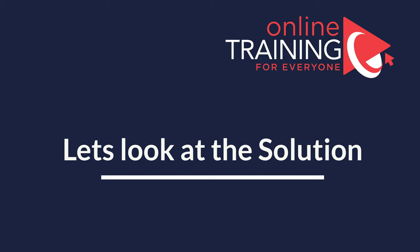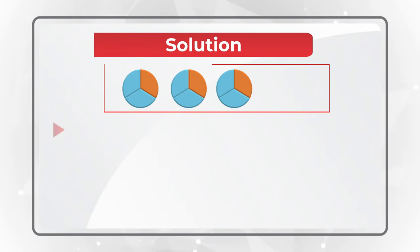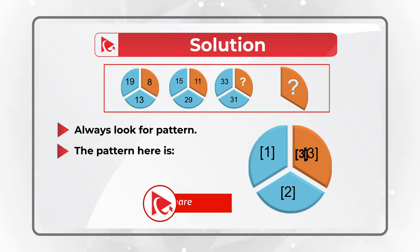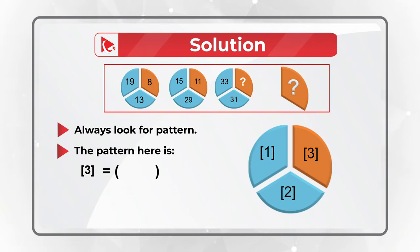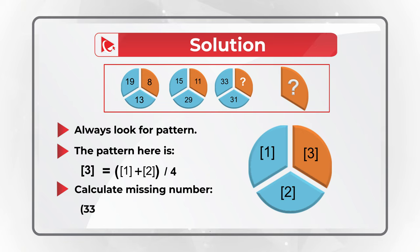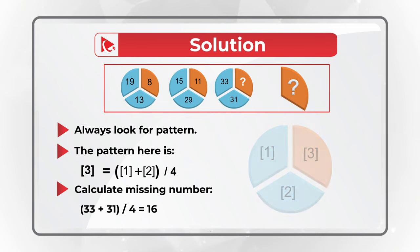You need to always look for patterns to solve these types of problems. The pattern here is that section 3 of the circle is calculated as sections 1 plus 2 divided by 4. So to calculate the missing number, add 33 plus 31 and then divide the sum by 4, and you will get the result of 16. Hopefully you've enjoyed this tricky question and now know how to answer similar problems on the test.